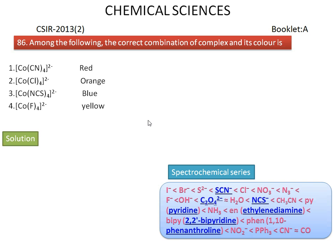According to the spectrochemical series, thiocyanato is a weaker ligand than chloro. Chloro is a weaker ligand than fluoro. Fluoro is a weaker ligand than cyano. Among these ligands, cyano is the strongest ligand and thiocyanato is the weakest ligand.